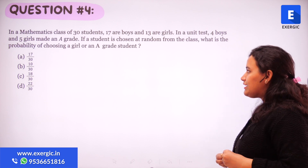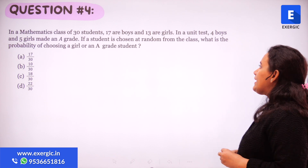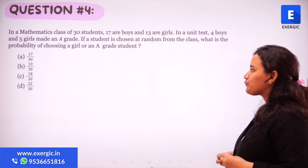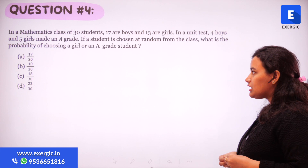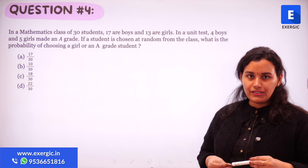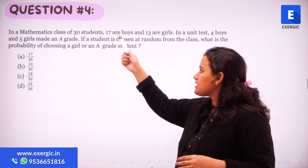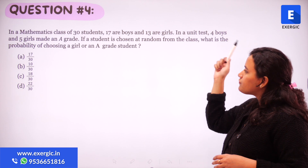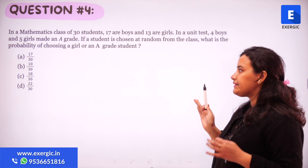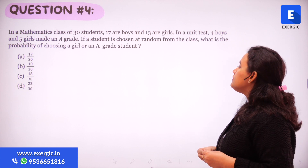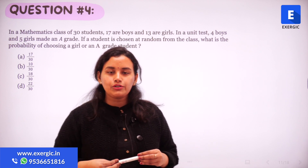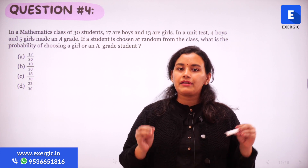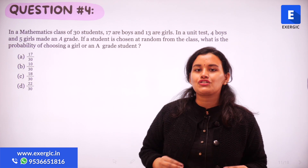Let us look at a question. In a mathematics class of 30 students, 17 are boys and 13 are girls. In a unit test, 4 boys and 5 girls got an A grade. If a student is chosen at random from the class, what is the probability of choosing a girl or an A grade student? So we have 30 students in a class of which 17 are boys and 13 are girls. Now out of these students, 4 boys and 5 girls got an A grade in a test that was conducted. So if a student is chosen at random, what is the probability of choosing a girl or an A grade student? Pause the video, try to attempt the question on your own, and after you've made your full attempt only then play the video and cross check the solution.